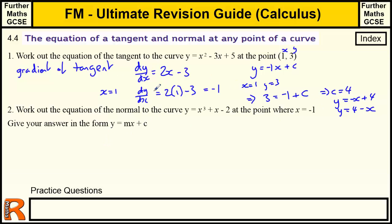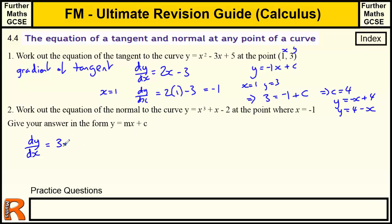That's a pretty standard opening. Question 2 is virtually the same except we're doing the normal. When we get to the point where we've got the gradient at the point, we just need to use the negative reciprocal — we change the sign and turn the fraction upside down if it's a fraction, or 1 divided by the whole number if it's not a fraction. So we find the gradient function: dy by dx.